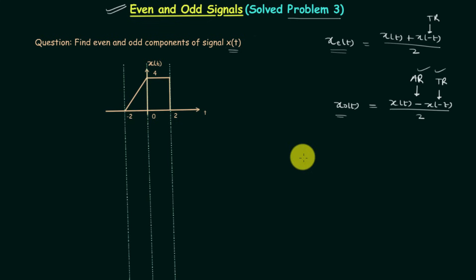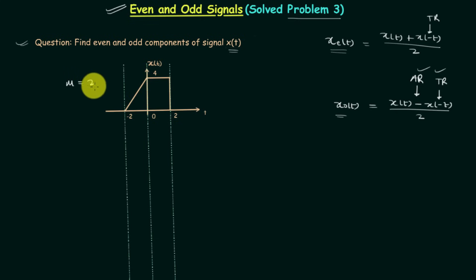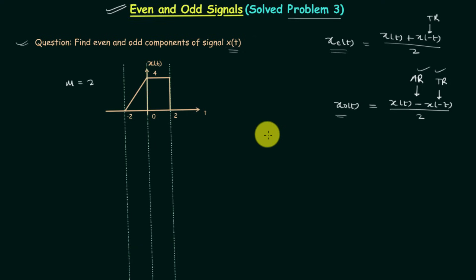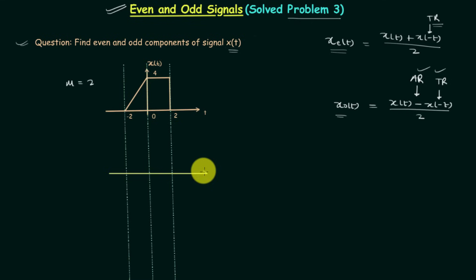We will use this to obtain the answer. From the waveform of signal X(t), from minus 2 to 0 we have a straight line with slope equal to 2, and from 0 to 2 the signal is constant with value equal to 4. We will first obtain the even component, and for this we need to perform the time reversal — simply flip the signal about the Y axis to obtain X(-t).